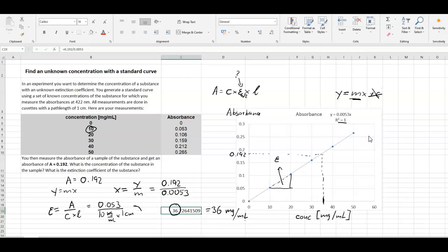And from that, we can actually easily calculate the extinction coefficient, which would give us 0.0053. And you see, this was exactly this gradient here.